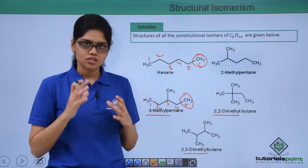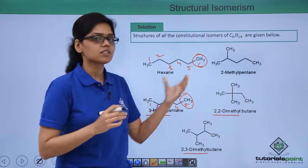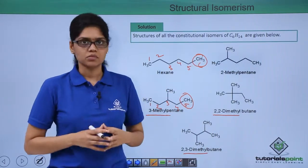I hope you are clear on what structural isomers are and how we can derive the various structural isomers of a given hydrocarbon. Thank you.